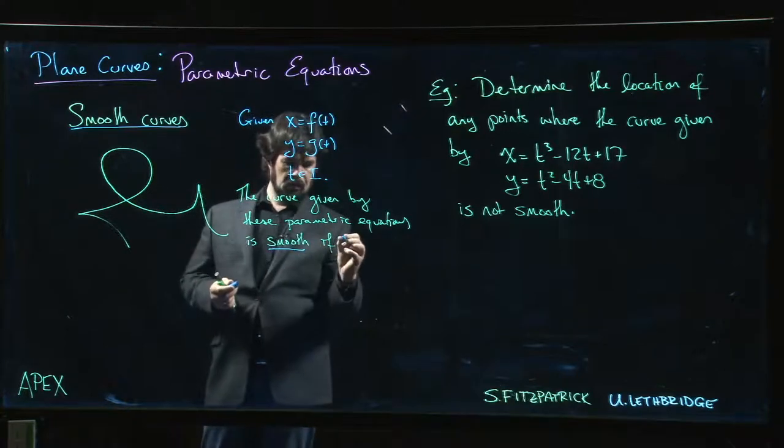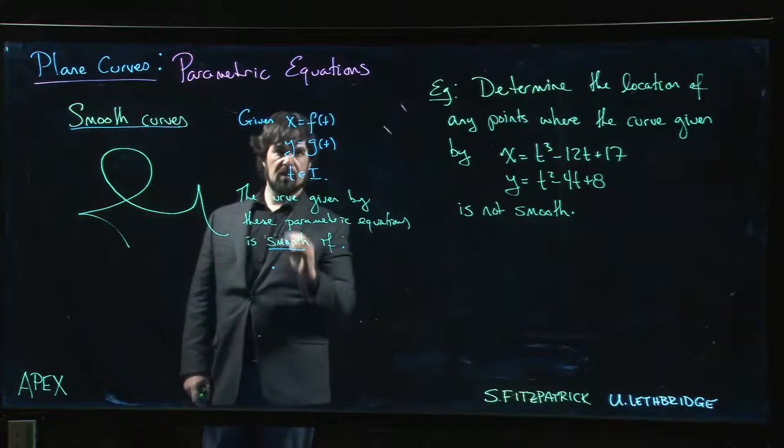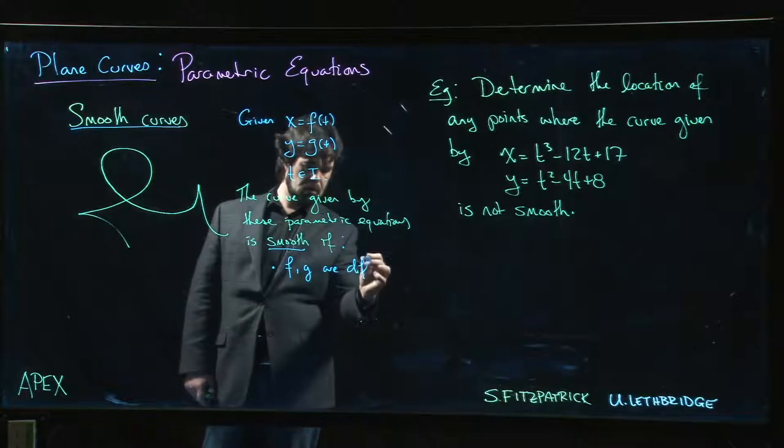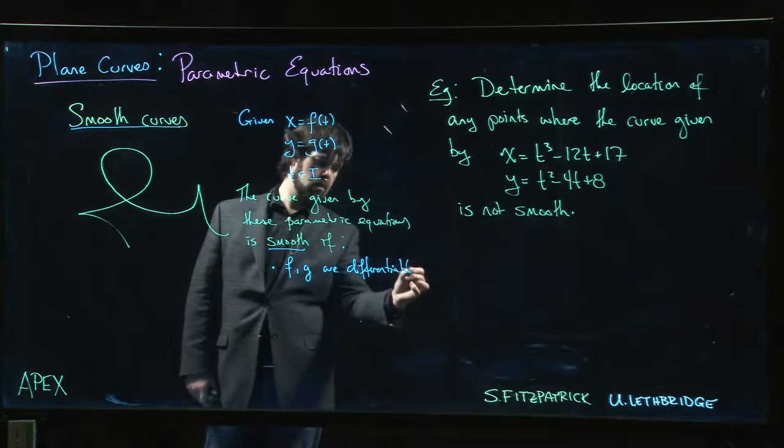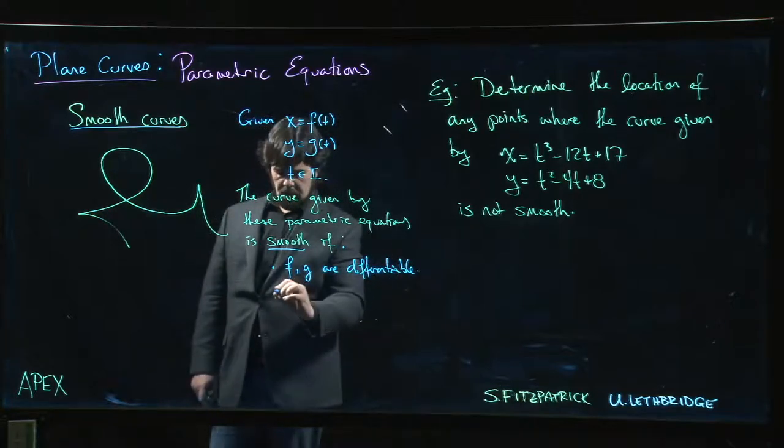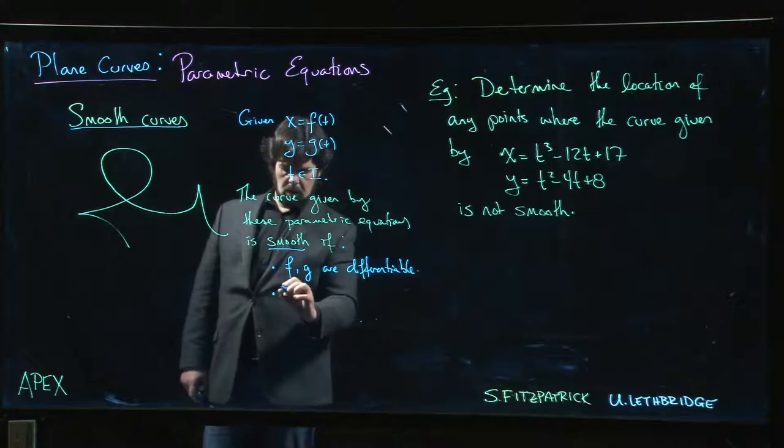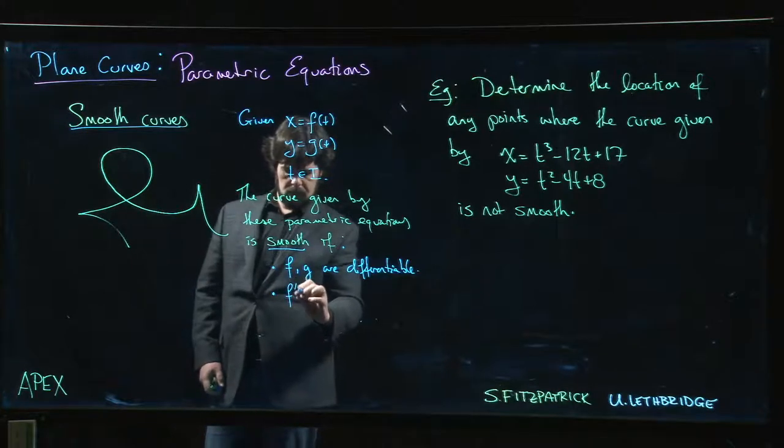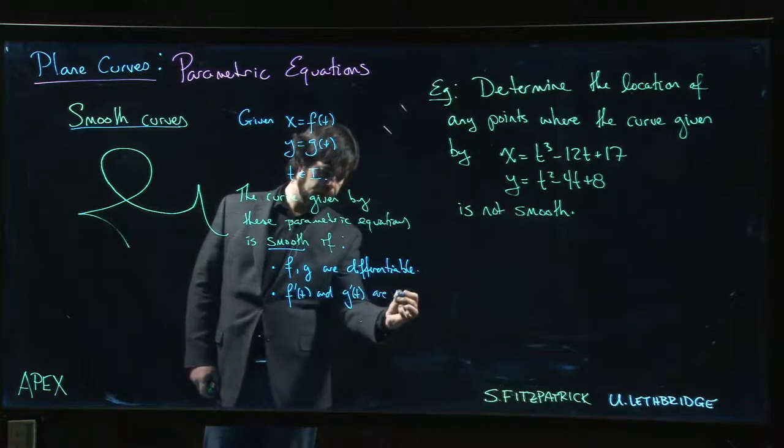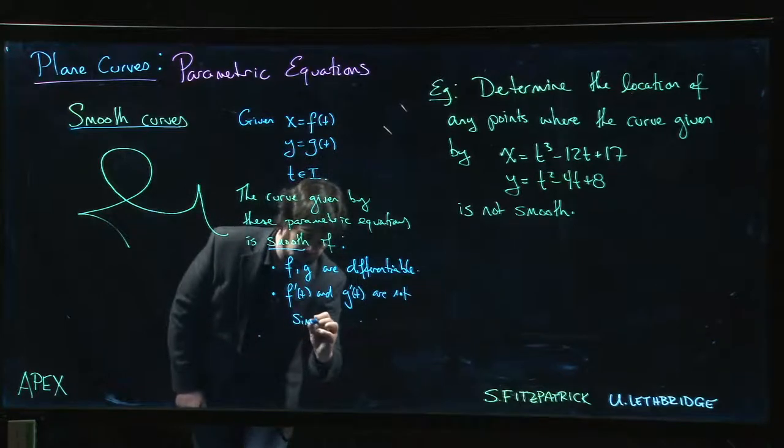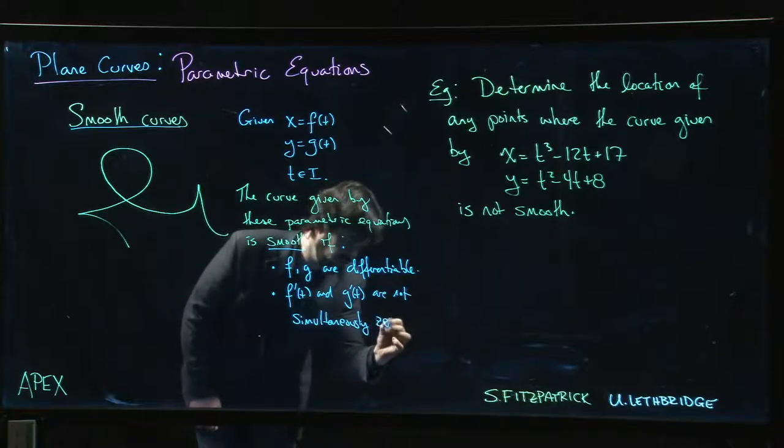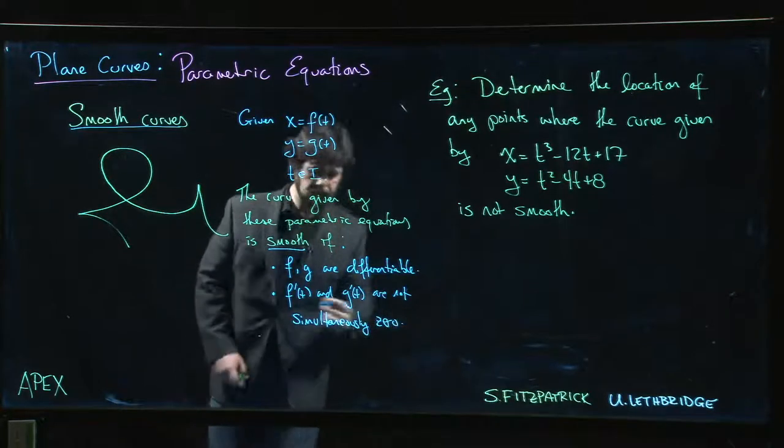We'll say that the curve given by these parametric equations is smooth if there's a couple of things that we ask for. First thing that we ask for is that f and g are differentiable. We might further ask that the derivatives be continuous, but for now we'll just say differentiable. And we don't want f prime of t and g prime of t to be simultaneously zero.